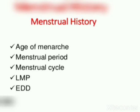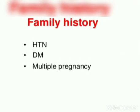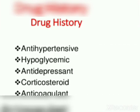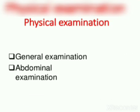Menstrual history includes the cycle, LMP (last menstrual period), and EDD (expected date of delivery). Family history covers hypertension, diabetes, depression, and multiple pregnancies. Drug history includes antihypertensives, hypoglycemics, antidepressants, corticosteroids, and anticoagulants.